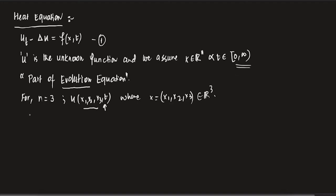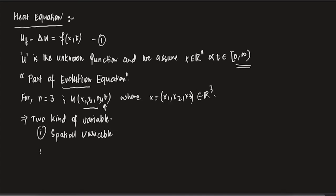So there are two kinds of variables: the spatial variable x1, x2, x3, and the time variable t, which is greater than 0. Whenever we work with the time variable, we assume it is always positive — we start a process at t equals 0 and move forward.